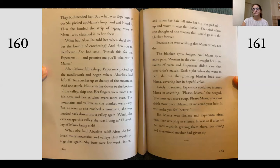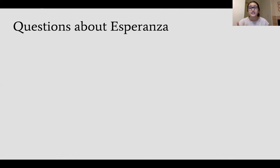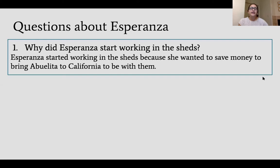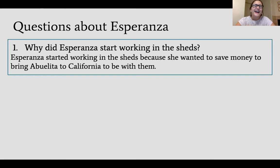Going back to our questions — for question one, why did Esperanza start working in the sheds? Esperanza started working in the sheds because she wanted to save money to bring Abuelita to California to be with them. She had the two women, Irene and Melina, come and help watch the babies, so Esperanza could start working again. She asked Miguel for a job, doing that so she could save money to bring Abuelita to California.